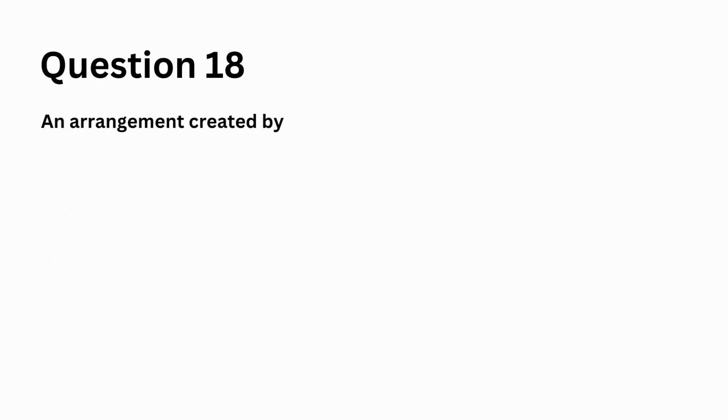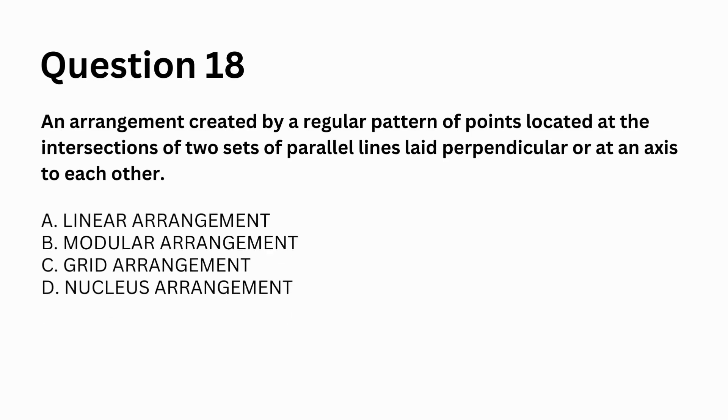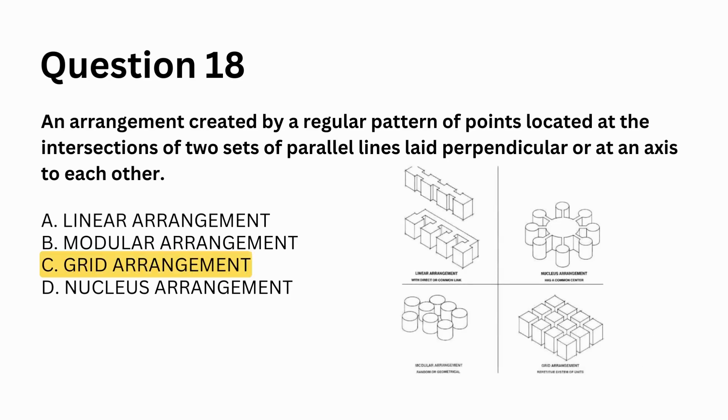An arrangement created by a regular pattern of points located at the intersections of two sets of parallel lines laid perpendicular or at an axis to each other. A. linear arrangement, B. modular arrangement, C. grid arrangement, D. nucleus arrangement. Answer: C. grid arrangement.